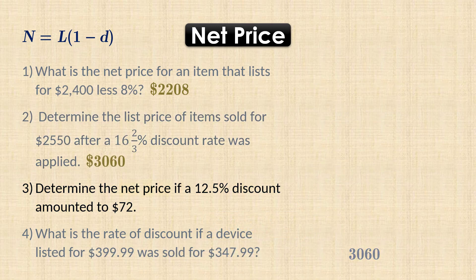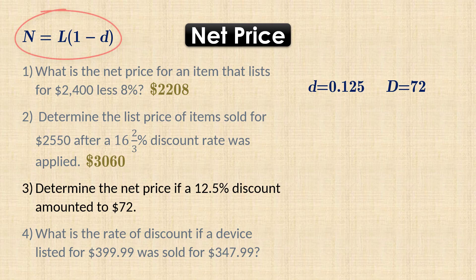In number 3, we want to calculate the net price if the rate of discount is 12.5% and the amount of discount is $72. That is, lowercase d is 0.125 and uppercase D is 72. Since the list price is not given here, we cannot calculate the net price directly using our formula.